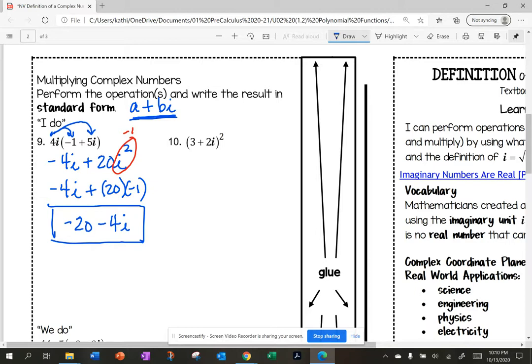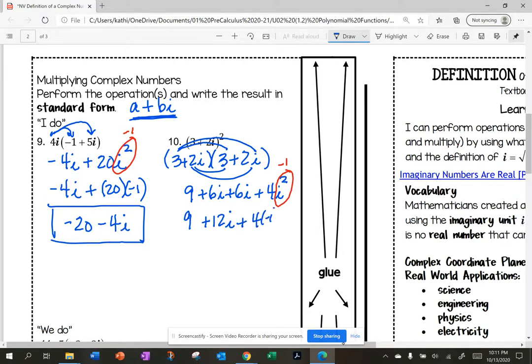Number 10, I have three plus two i quantity squared. So expanding this, I get three plus two i times three plus two i. So this is a double distribution. So three times three is nine. Three times two i is six i. Two i times three is six i and two i times two i is four i squared. Again, I am going to substitute i squared with negative one. So I have nine plus 12 i plus four times negative one. So nine minus four is five plus 12 i. And I am in standard form, A plus Bi.